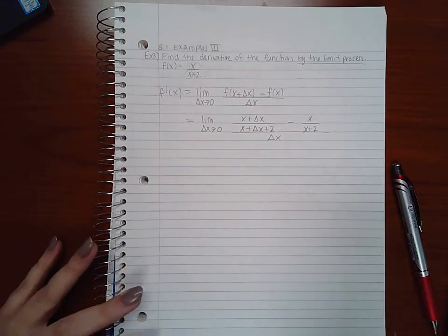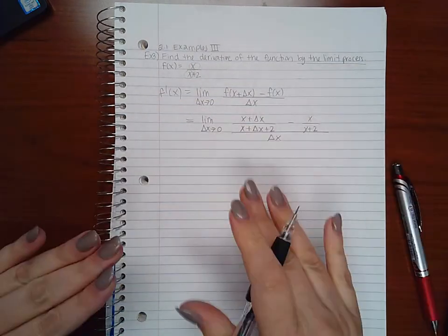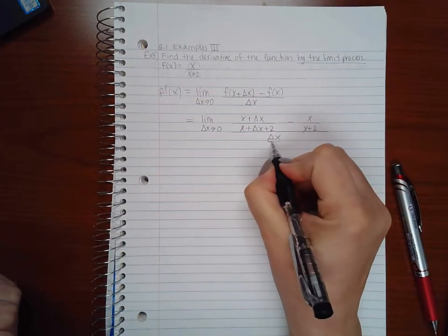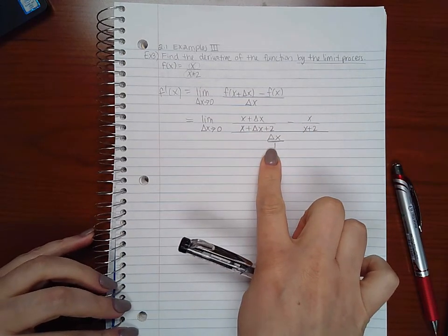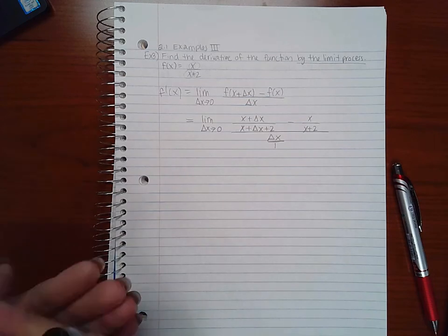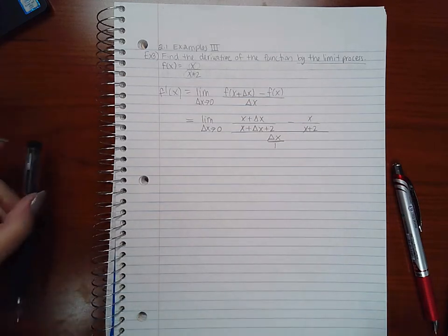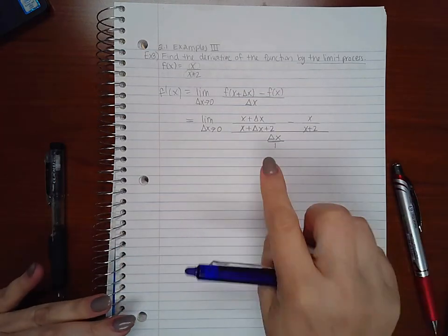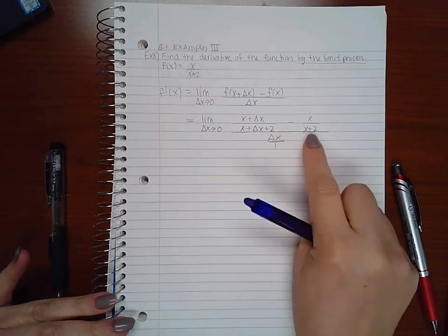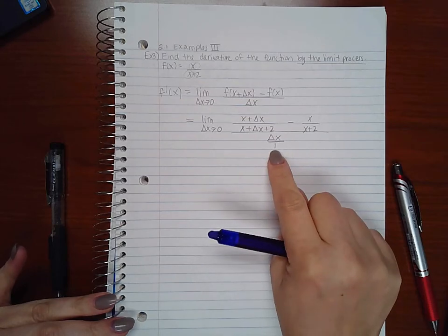Now this is what's called a complex fraction. You have fractions on top of another fraction. The easiest way to reduce this is to multiply by what's called the common denominator. In this case the common denominator would be this denominator times this denominator times this denominator.